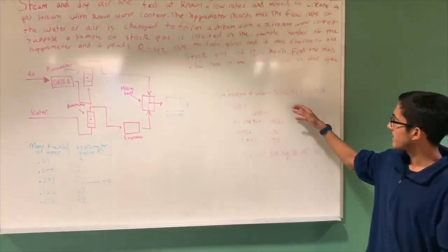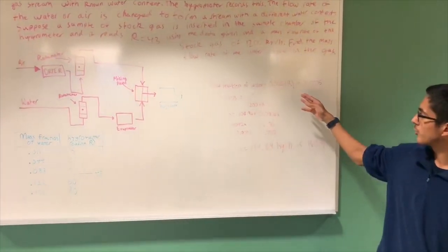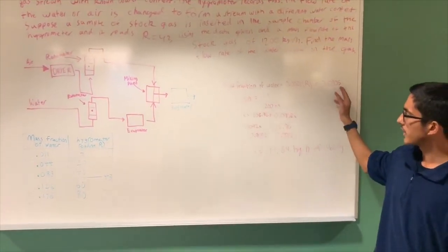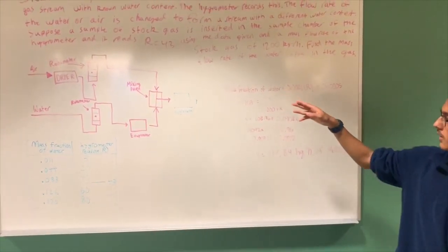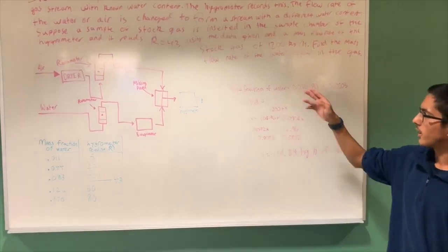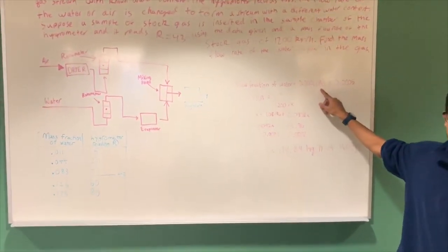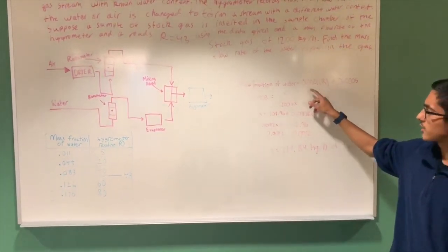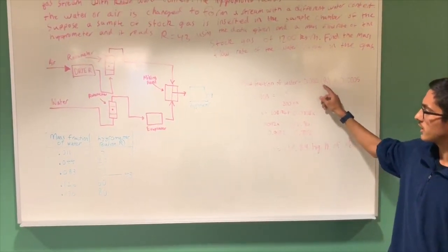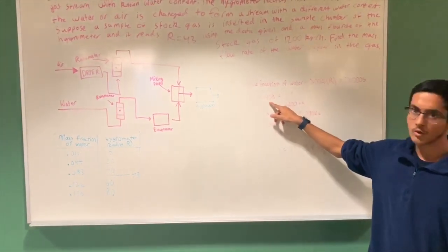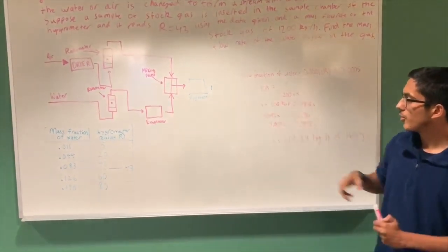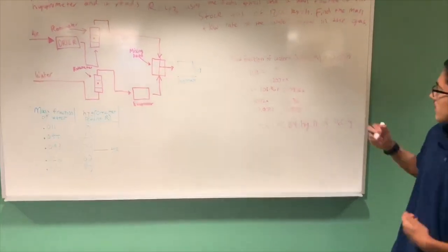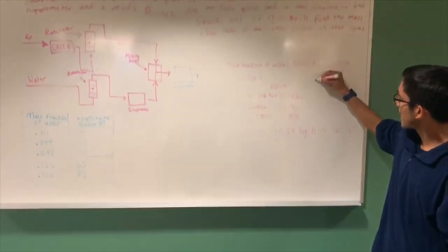After obtaining the line of best fit which is 0.0021r plus 0.0005, we can find the mass fraction of water when r equals 43 by plugging in 43 for r. We find that the mass fraction of water at r equals 43 is 0.0908, and now we can proceed to the next step.